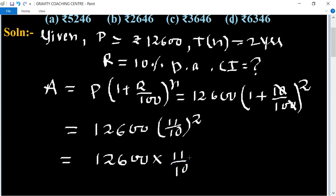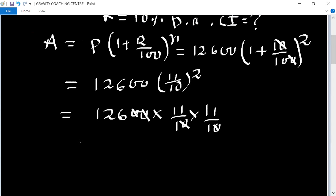10 into 11 upon 10 and zero zero cancel and zero zero. So after multiplying its product says rupees 15,246 which is the amount. So therefore compound interest equal to its formula is amount minus principal.